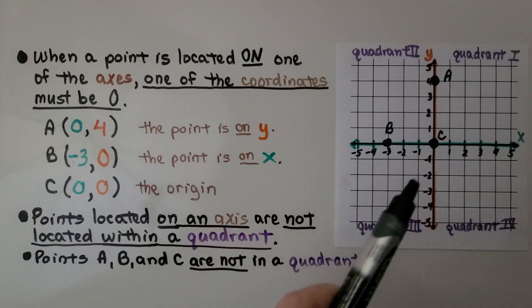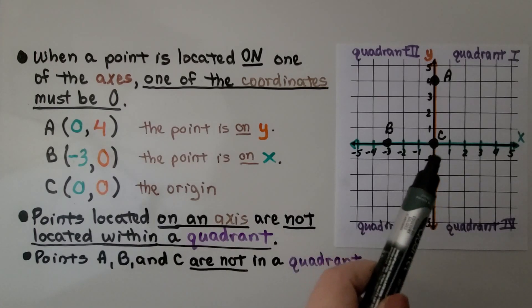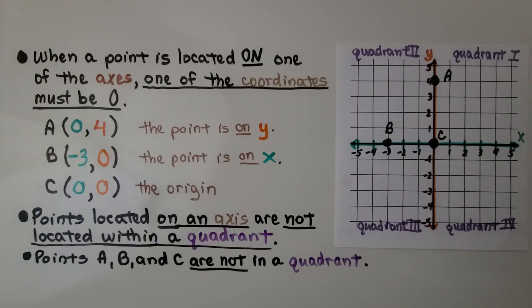And point C is directly on the origin. Zero, zero. It's zero for x and zero for y. And points located on an axis are not located within a quadrant. Points A, B, and C are not in a quadrant.